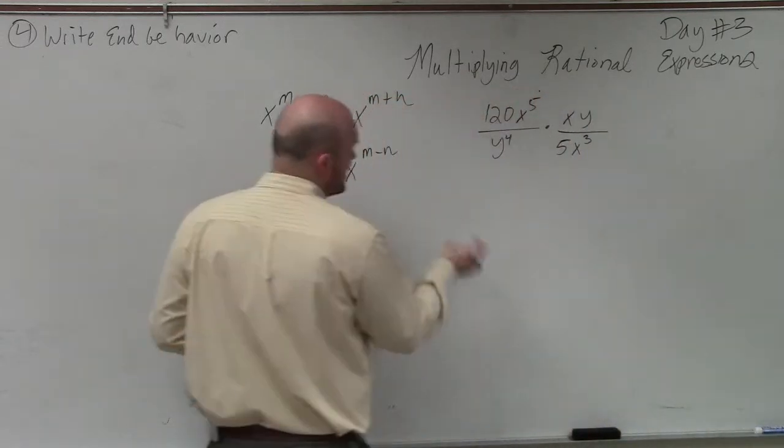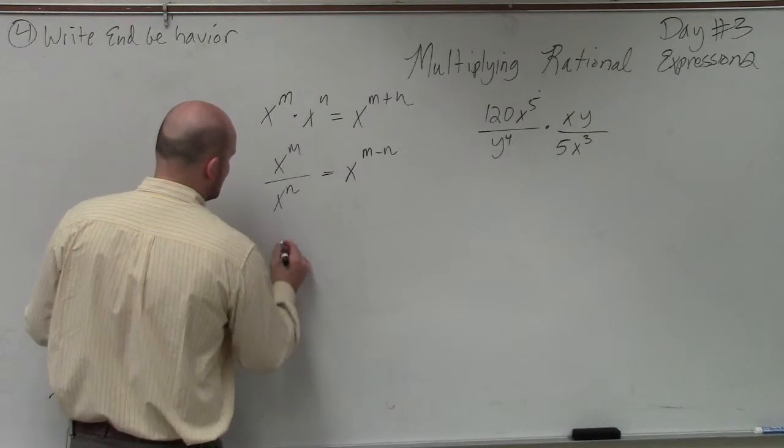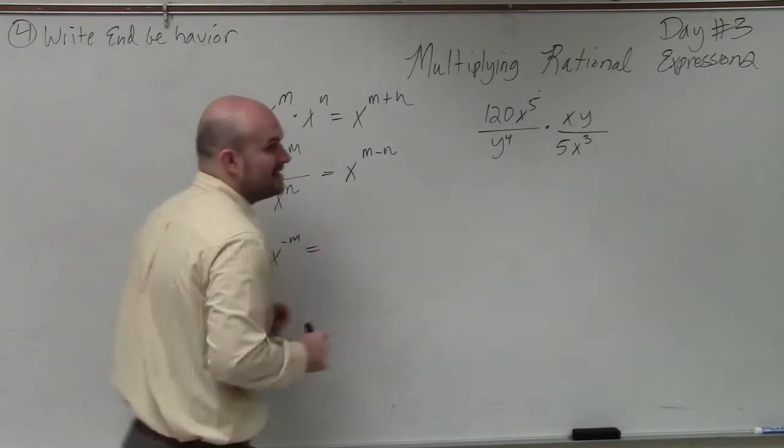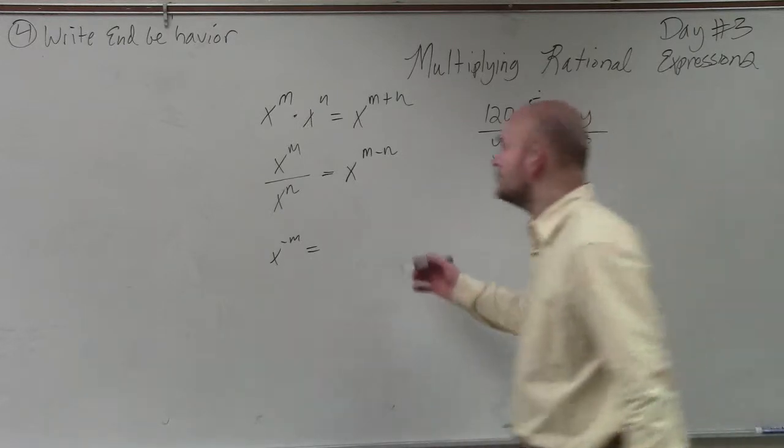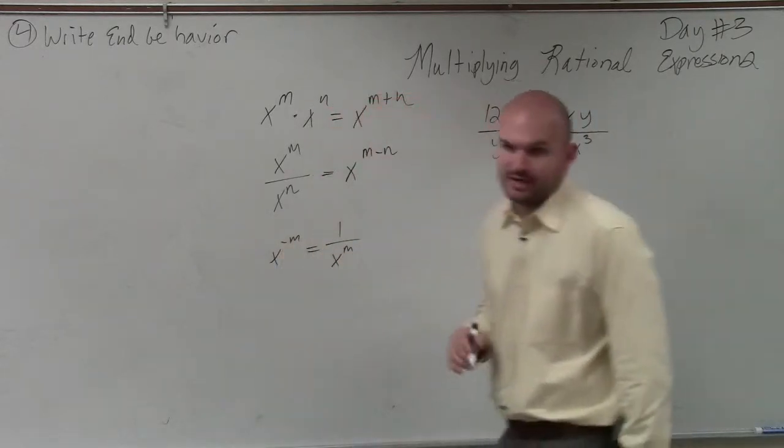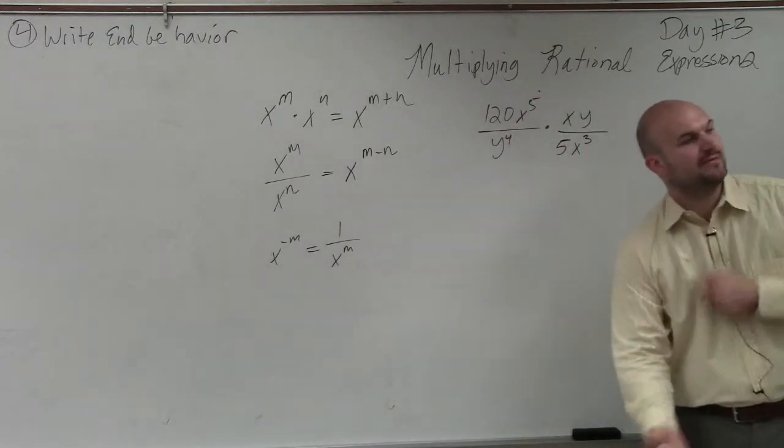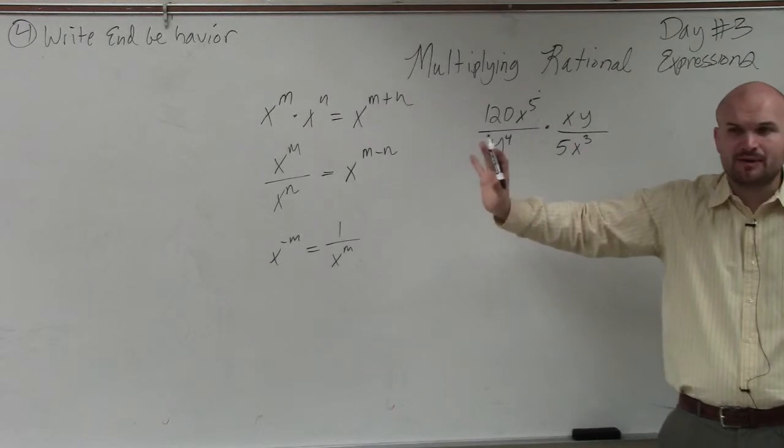And the third one, which we'll actually go through as well today, was if I had x to the negative m power, to rewrite that as a positive, I would have to use the reciprocal. So I'd write it as x to the positive m in the denominator. And if it was negative in the denominator, then I'd write it positive in the numerator. Everybody follow me? That's basically what we did day one.